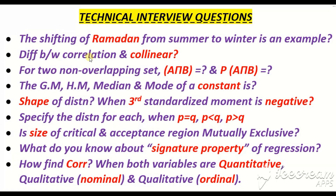The difference between correlation and collinearity is very simple. When we have two dependent variables and we want to study the relationship between them, we use the correlation model. And when we have two independent variables — two explanatory or predictor variables — and we want to judge or investigate the relationship between them, then we use the concept of collinearity. This is a very simple difference.